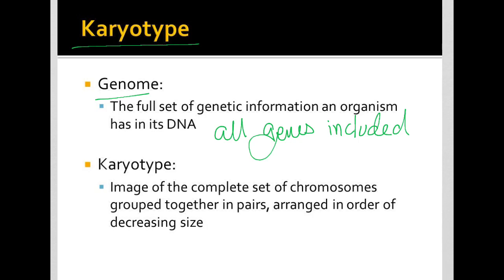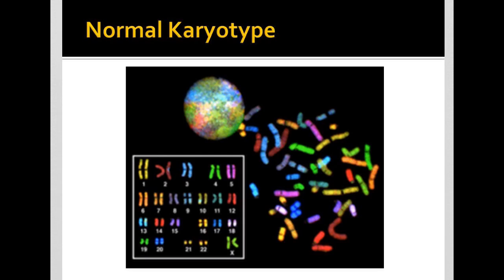A karyotype is going to actually be an image of an organism's complete set of chromosomes, grouped together in pairs — which we know will be homologous pairs — and arranged in a specific order. By convention, we order them by decreasing size, and we number our chromosomes in that way. So we might take out and stain individual chromosomes and then organize them into a picture called a karyotype.